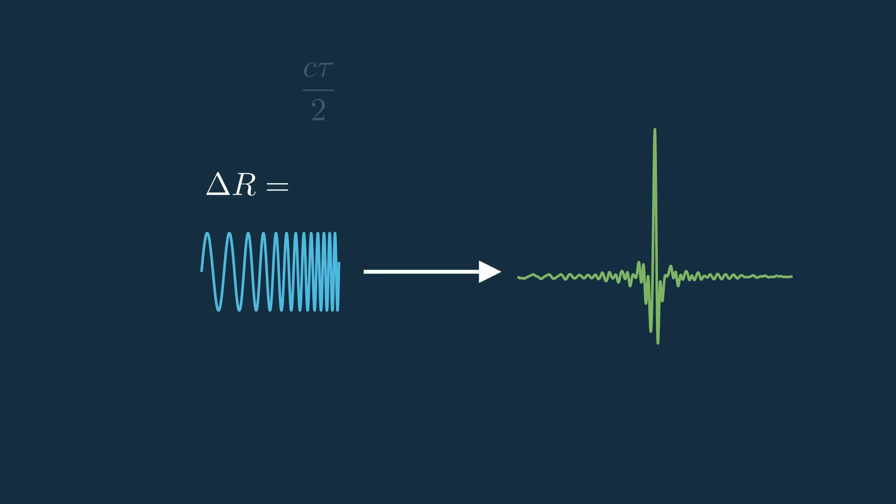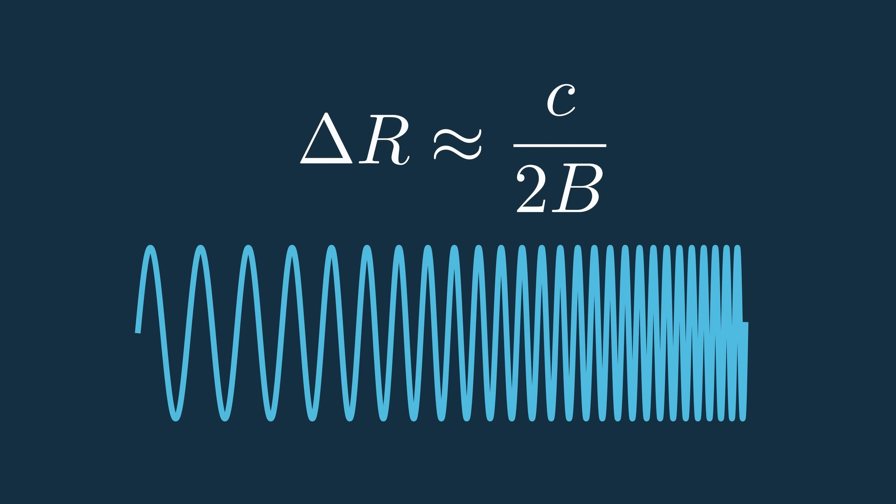So the range resolution gets better with increasing bandwidth, or the range resolution is inversely proportional to bandwidth because smaller is better in this case. Really we just approximate the range resolution in a pulse compressed system to not rely on the transmit pulse, and we have the bandwidth in the denominator.